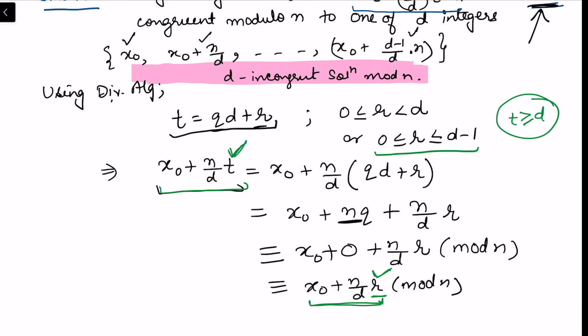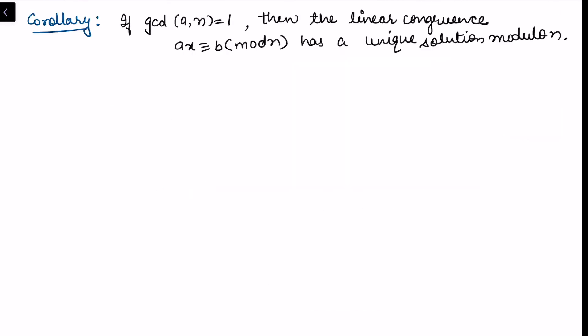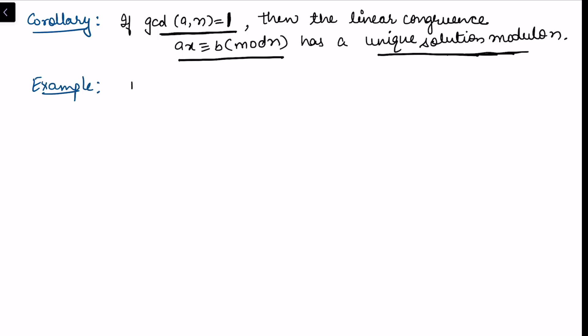As a corollary of this theorem: if gcd(a, n) = 1, then the linear congruence ax ≡ b (mod n) has a unique solution modulo n. Since d = 1, there is exactly d = 1 incongruent solution, i.e., a unique solution modulo n.